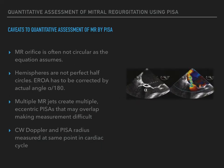There are a number of caveats and limitations that may make the PISA calculation inaccurate. The PISA method assumes that the MR orifice is a circle. Often the orifice is irregular or ovoid, and therefore the flow convergence area does not consist of hemispheres. PISA also assumes that the hemispheres are perfect half circles. This often is not the case, as flow can be restricted by calcified leaflets or the ventricular wall. An angle correction factor has to be applied to the effective regurgitant orifice area, which is the actual angle of the hemisphere divided by 180.